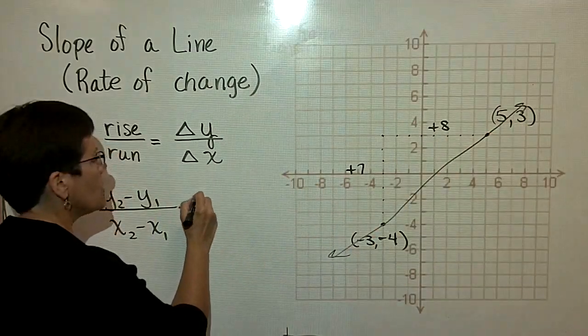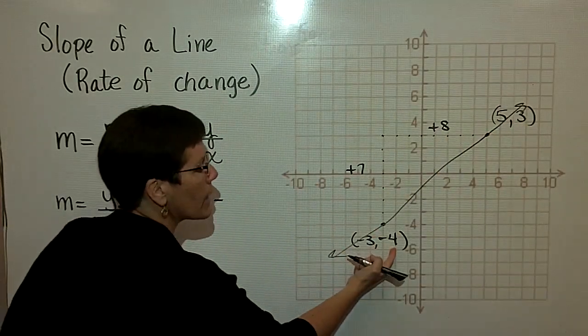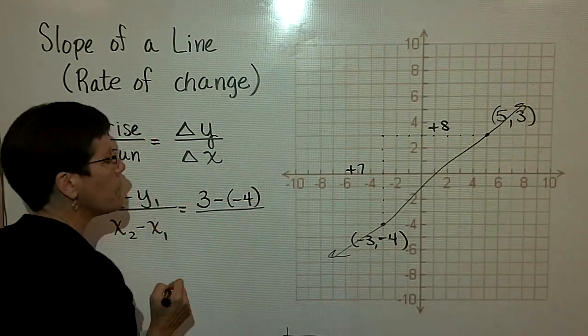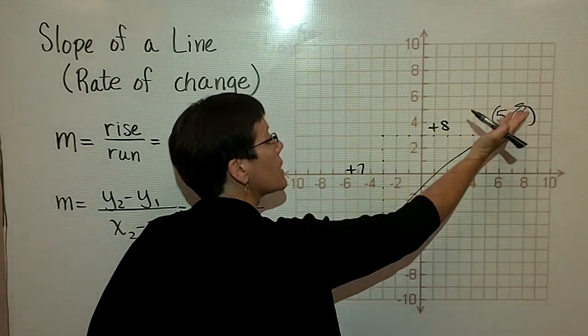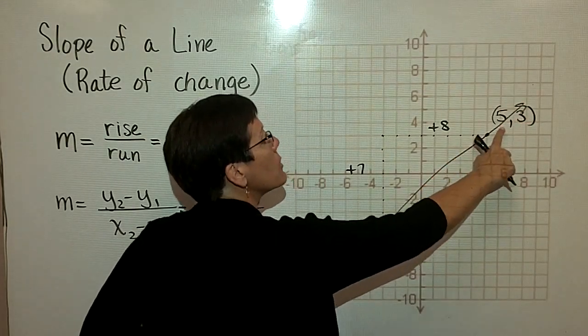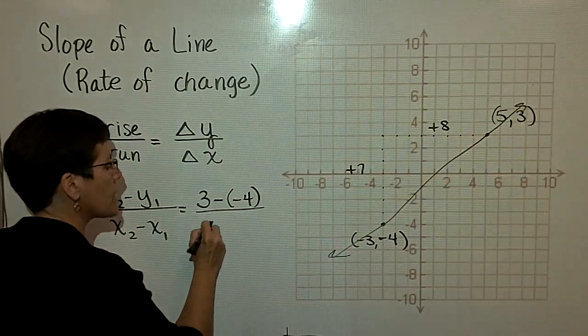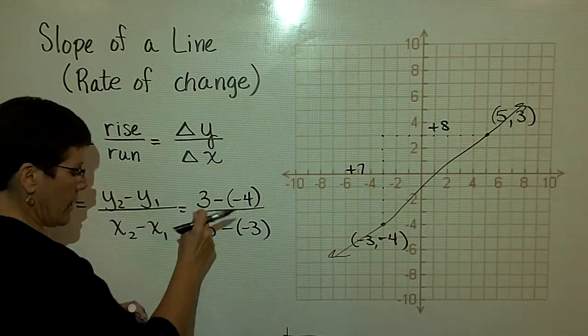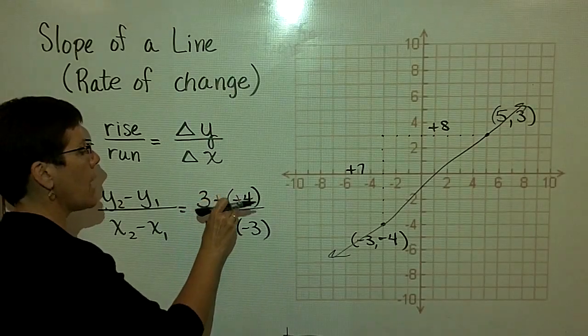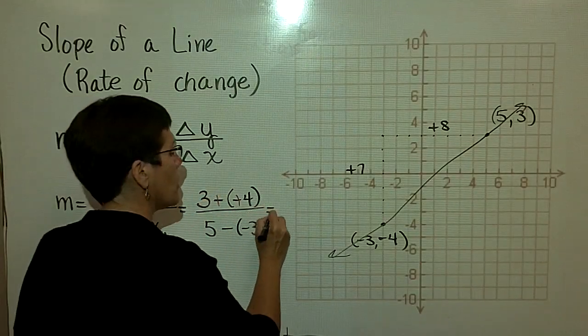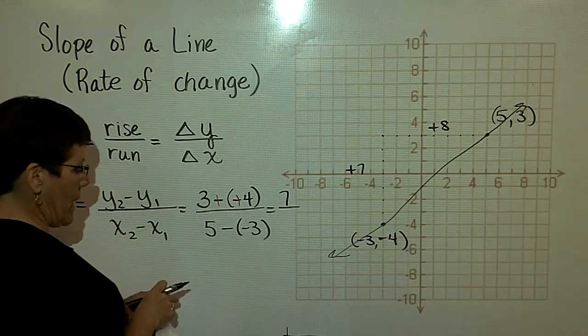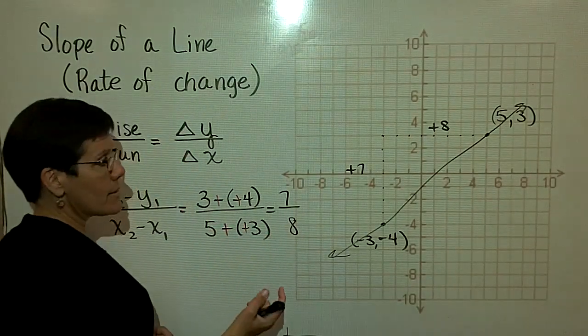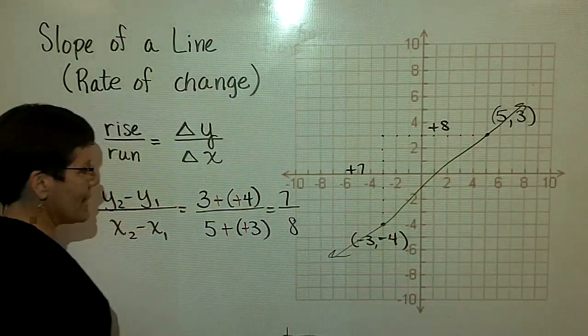So if you decide to call that the second ordered pair, then the Y value is 3. So you would take 3 and subtract the Y value in this ordered pair, so you're subtracting a negative 4. If you make this one the second ordered pair, then in the denominator, you've got to use this value first because you're calling that X sub 2, and then you've got to subtract that negative 3. And when you subtract the negative number, remember that you add the opposite. And so in the numerator, I have a positive 7 and 5 minus a negative 3 is 5 plus 3. And I do get that slope of a positive 7 over 8.